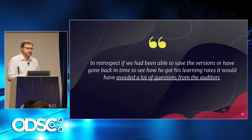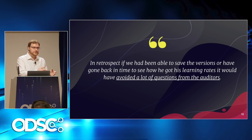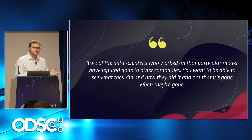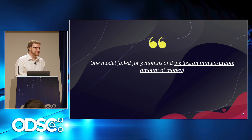Here are some interesting quotes from real people — I won't attribute them to specific companies. One team said: 'In retrospect, if we'd been able to save the versions or gone back in time to see how a certain data scientist figured out the learning rate they used, it would have avoided a lot of questions from the auditors.' It's interesting that machine learning teams are now being audited and need to justify why they chose certain parameters and datasets. Another person said: 'Two of the data scientists who worked on a particular model have left for other companies, and you want to be able to see what they did and how they did it — you don't want them to walk out the door with the knowledge in their head.'